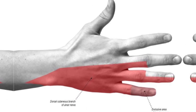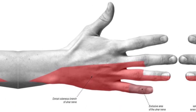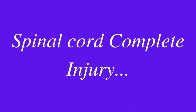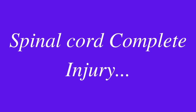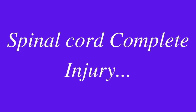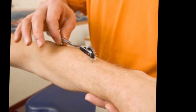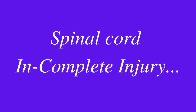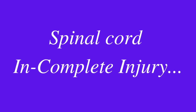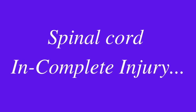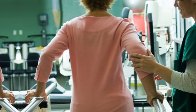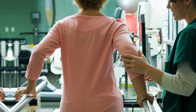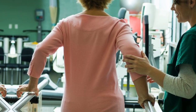Injury can occur at any level of the spinal cord and can be complete or incomplete. In a complete injury, there is a total loss of sensation and muscle function below the lesion. In an incomplete injury, some nerves are slightly damaged. Recovery is possible, but never to the pre-injury level.